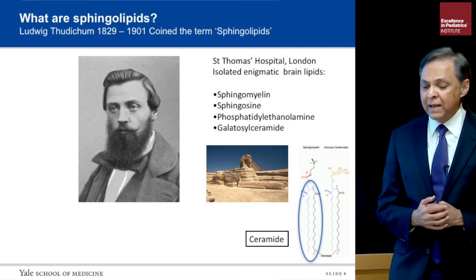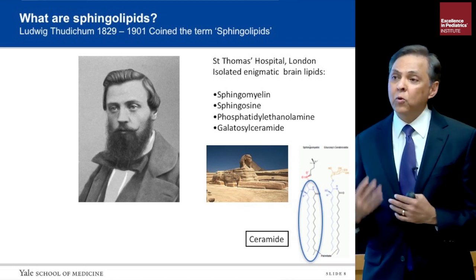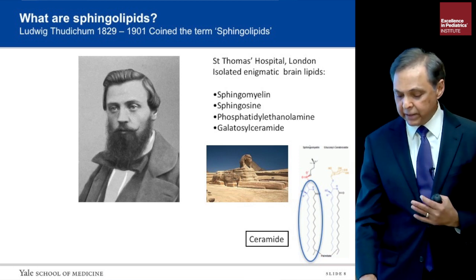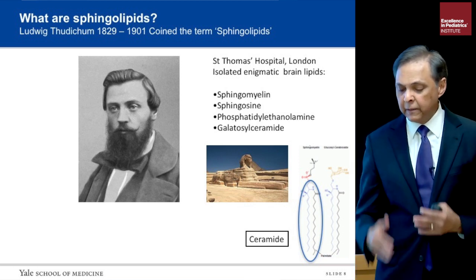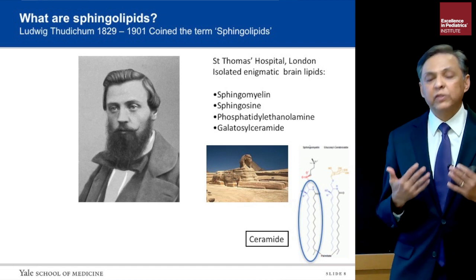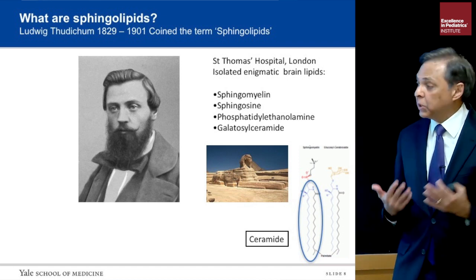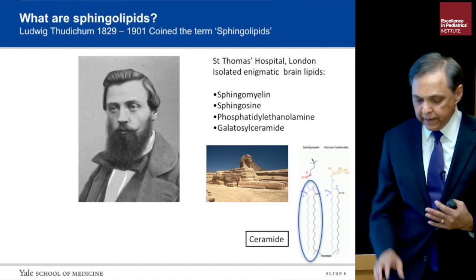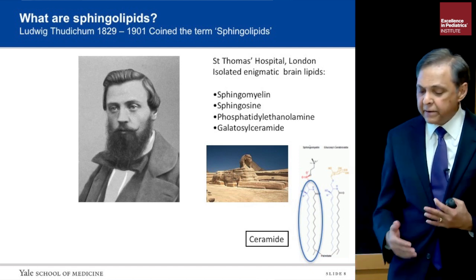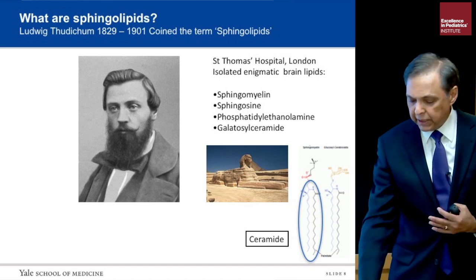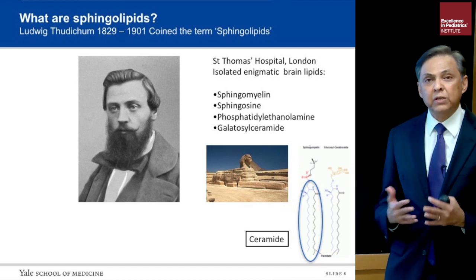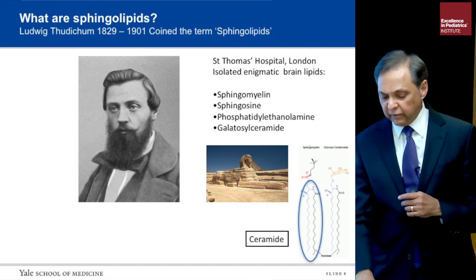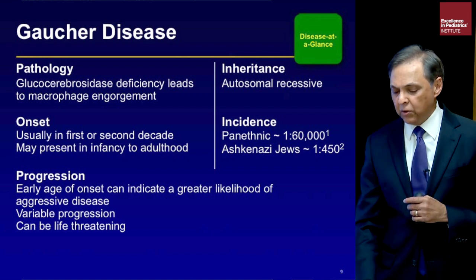The core structure of the sphingolipid is a ceramide. A ceramide is a core structure of a fatty acid linked to sphingosine by an amide bond.